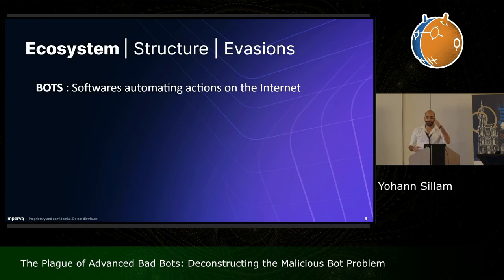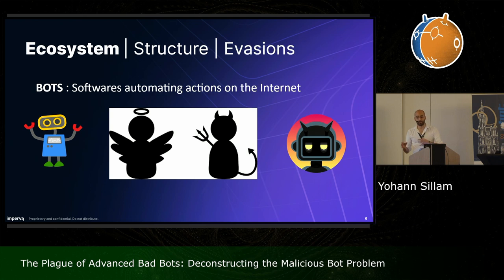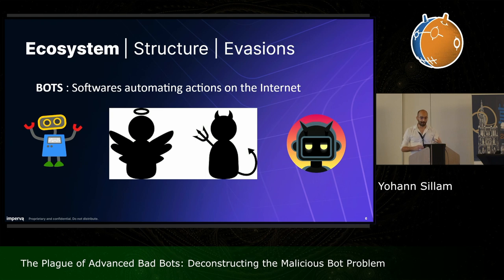First of all, just a quick definition: what exactly is a bot? It's a software that automates actions on the internet. There are good bots — for example, Google bot that's crawling the internet in order to improve its search engine results. And you have bad bots — for example, vulnerability scanners that are constantly scanning the internet in search of vulnerable web servers in order to exploit them. The difference between the two is the consent of the web server to be reached by this kind of bot. A good bot will always respect the robots.txt file at the root of the web server, which specifies which addresses a website agrees to be reached at by bots.